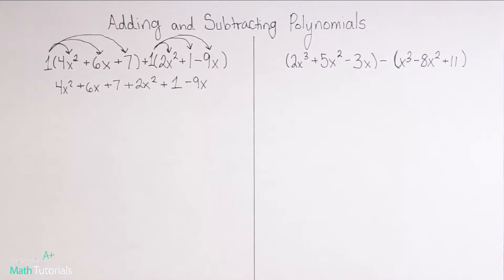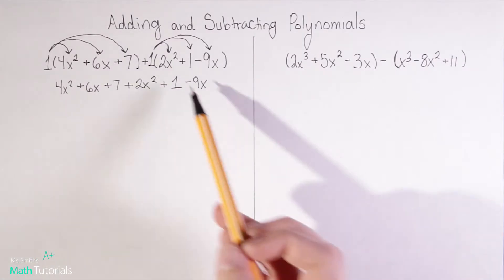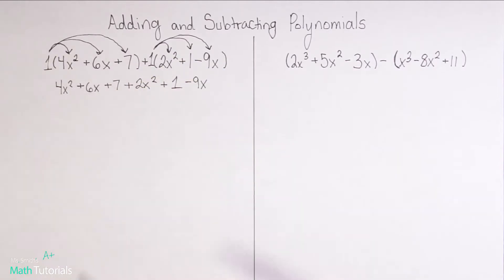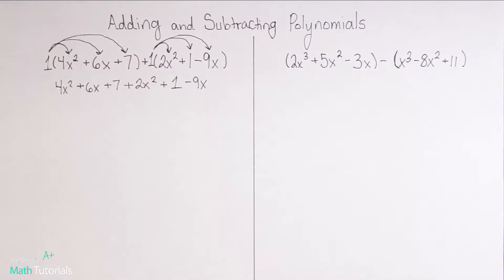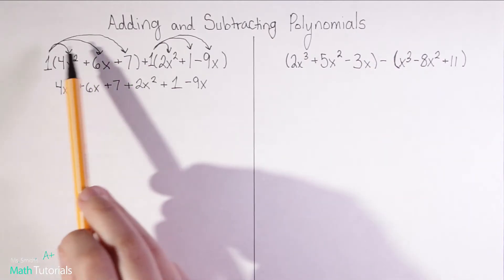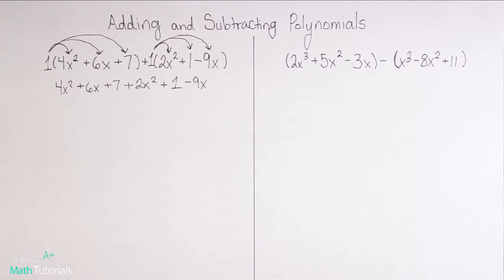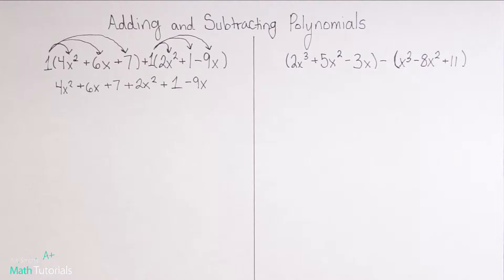A lot of teachers skip over that step and just say you're adding, so get rid of the parentheses and combine like terms. There's nothing wrong with that, but as you'll see in a minute, this step of distributing the 1 is actually pretty important. Even though multiplying a positive 1 times anything doesn't change the number, once we get a negative it will. That's why I really like to show that step.